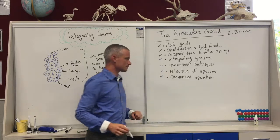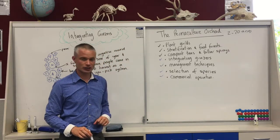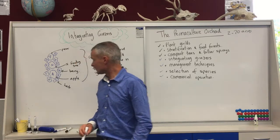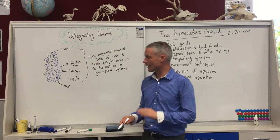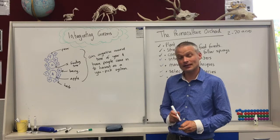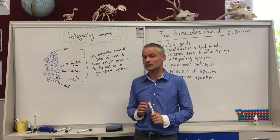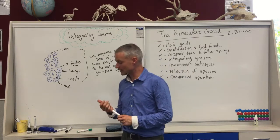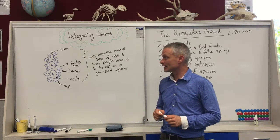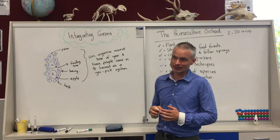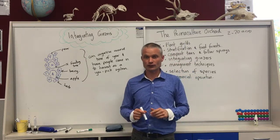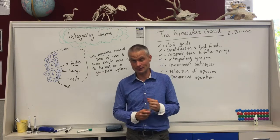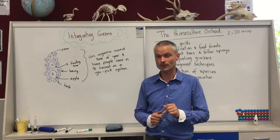The last two points — species selection and the commercial operation — all tie into these previous points, but there are various ways you can lay out your food forest system and think about the selection and placement of your species. The first part of species selection is that you want to do an analysis for your zone to determine what species will be most productive.